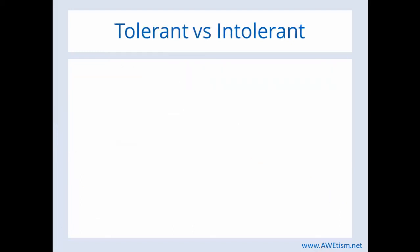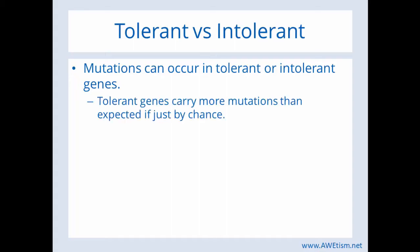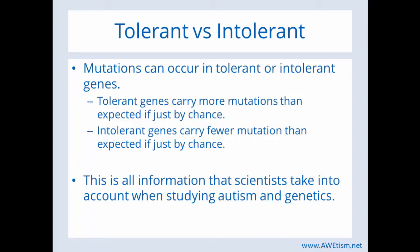Another thing to consider with genetics and biology is tolerant versus intolerant genes. Mutations can occur in tolerant or intolerant genes. Tolerant genes carry more mutations than expected by chance, while intolerant genes carry fewer mutations than expected by chance. This is all information scientists take into account when studying autism and genetics. So if you do genetic testing and your child has some type of mutation, there's a lot more to understand than just the gene it occurred in.